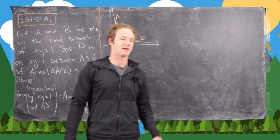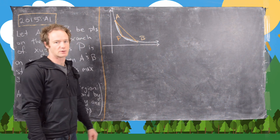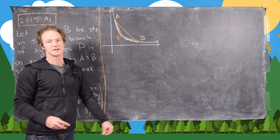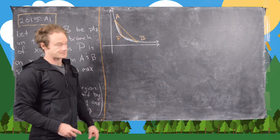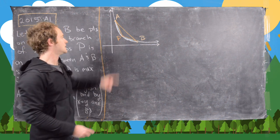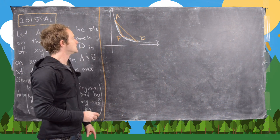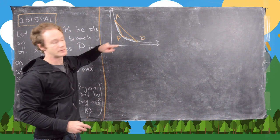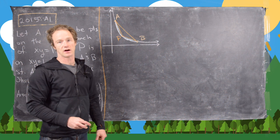In order to wrap our heads around that, I've made a little drawing here. We have the hyperbola XY equals 1, that's Y equals 1 over X, and here we're looking at the branch in the first quadrant. I've got a point A and a point B on the hyperbola, there's my point P which is on the hyperbola, and we want this triangle to be as big as possible. What we want to show is that this little sliver here colored in blue is the same area as this sliver here also colored in blue.